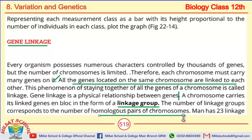This is an important MCQ point: the number of linkage groups corresponds to the number of homologous pairs of chromosomes. Humans have 46 chromosomes, so the number of homologous pairs is 23. Therefore, humans have 23 linkage groups.